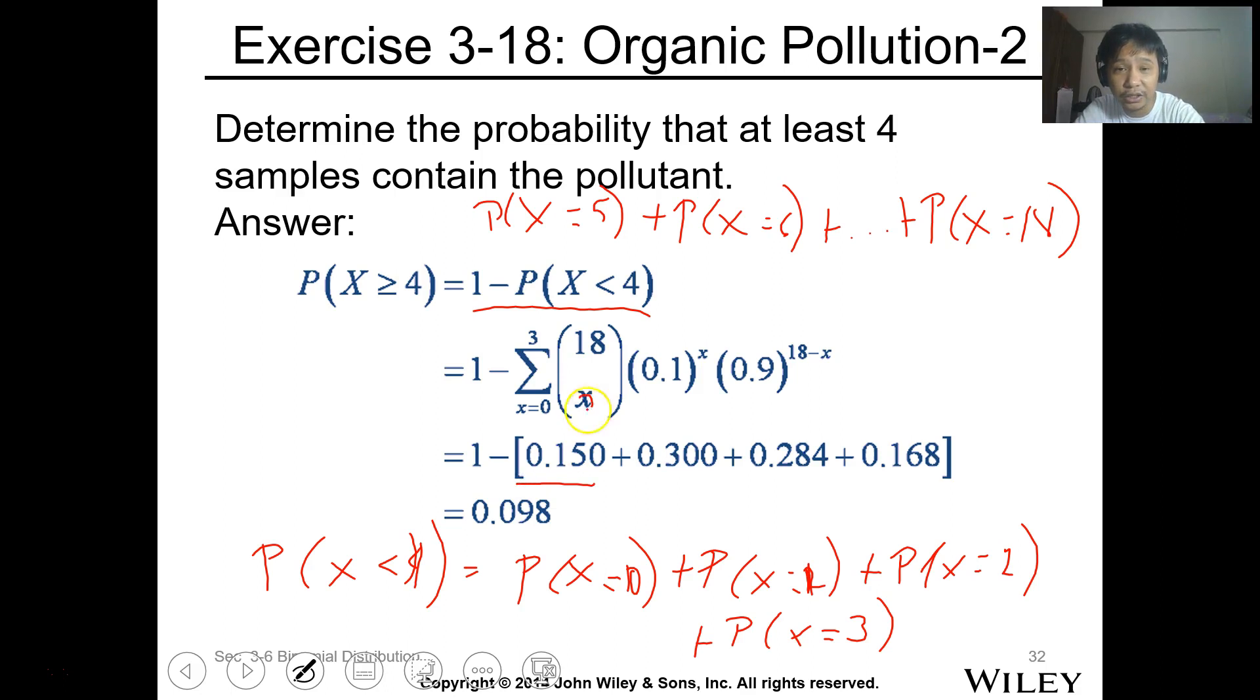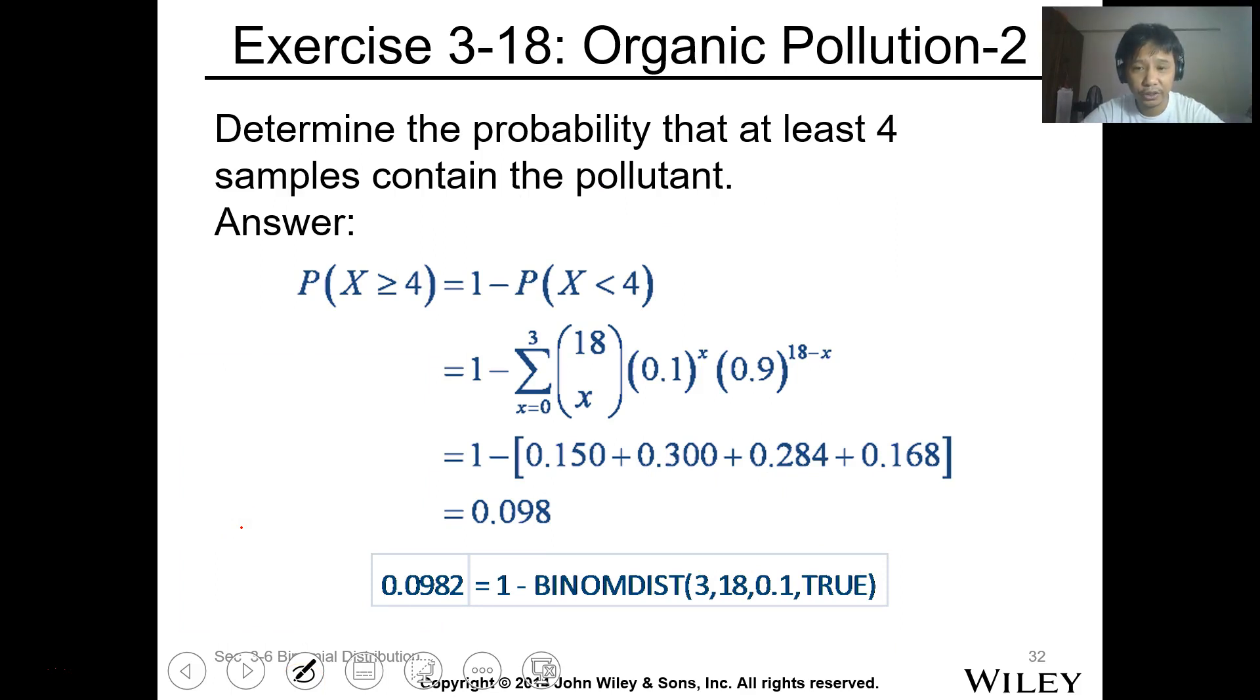For each probability, this is for 0. You just replace this. This is X equals 0, this is X equals 1, this is X equals 2, this is X equals 3. When you substitute X in each, calculate each value, this should be the answer. And when you add them and subtract from 1, this is it. It's the same as if you add 5 to 18, but that's more calculations, so it's easier to just subtract. You can use this function in Excel. If you put true, it will add from 3 to 0.